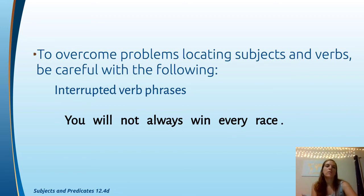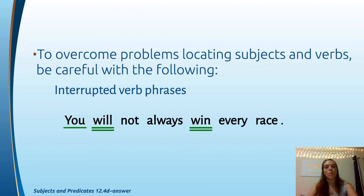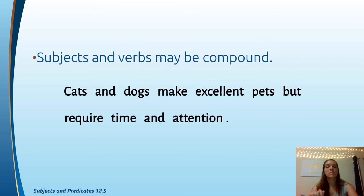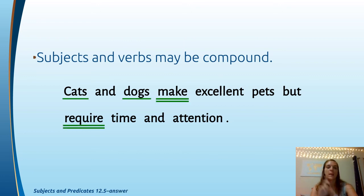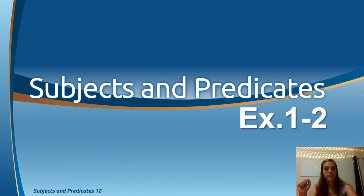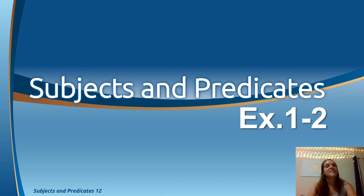Interrupted verb phrases are common — for example, 'You will not always win every race.' Find the verb phrase 'will win' and the subject 'you.' Remember, 'not' and 'always' are not part of the verb phrase. Subjects and verbs can also be compound: 'The cats and dogs make excellent pets but require time and attention.' Find all the verbs — 'make' and 'require' — and the compound subject — 'cats and dogs.' Read the whole sentence. This should take you about seven minutes — time yourself and go for it.